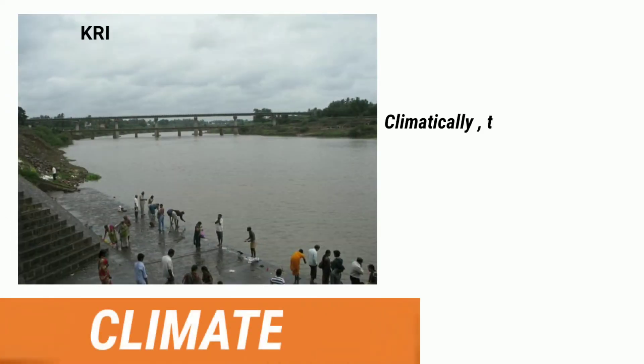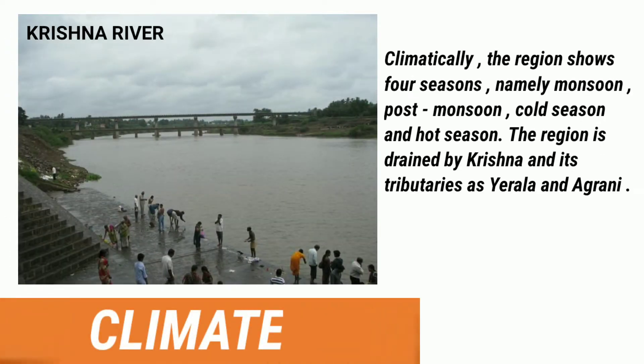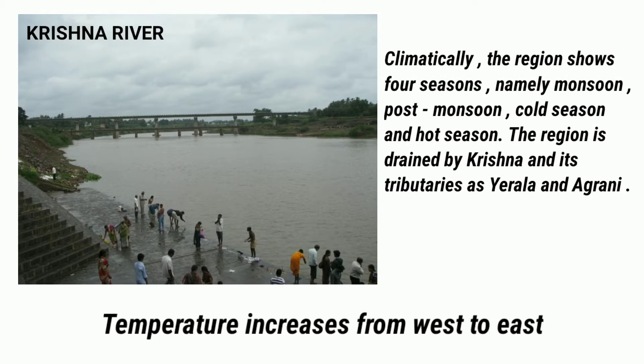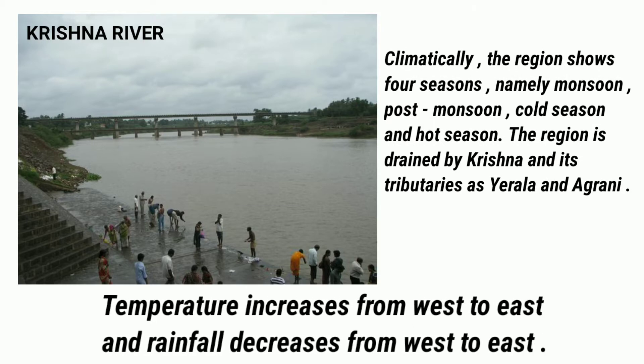Climate: Climatically, the region shows four seasons, namely monsoon, post-monsoon, cold season, and hot season. The region is drained by the Krishna river and its tributaries.